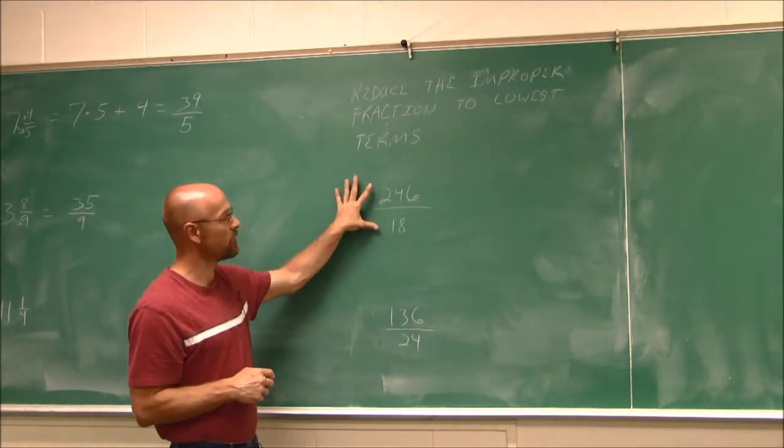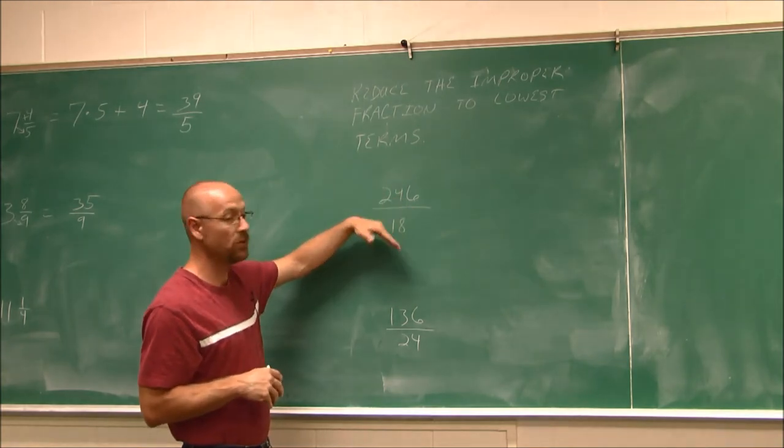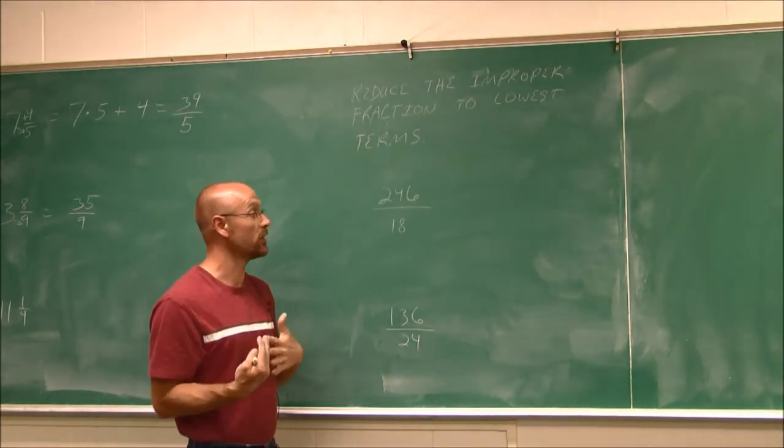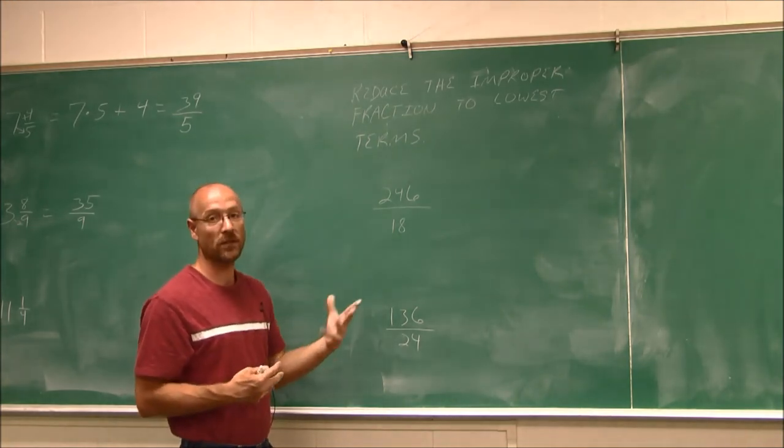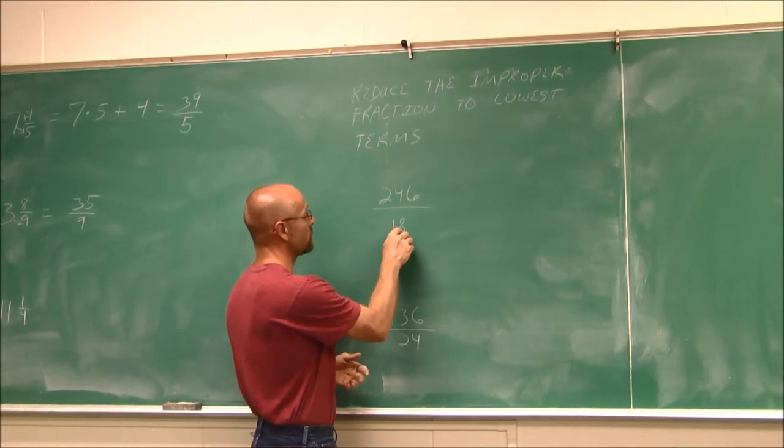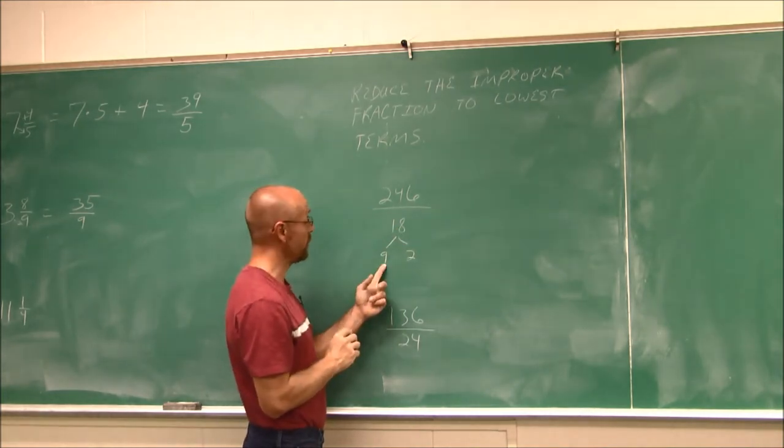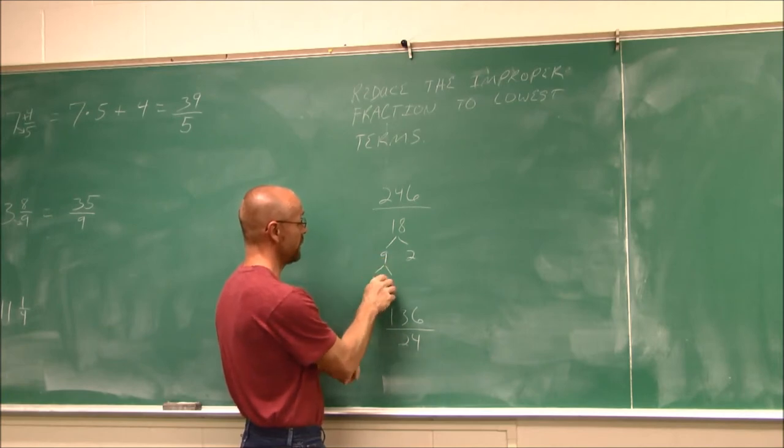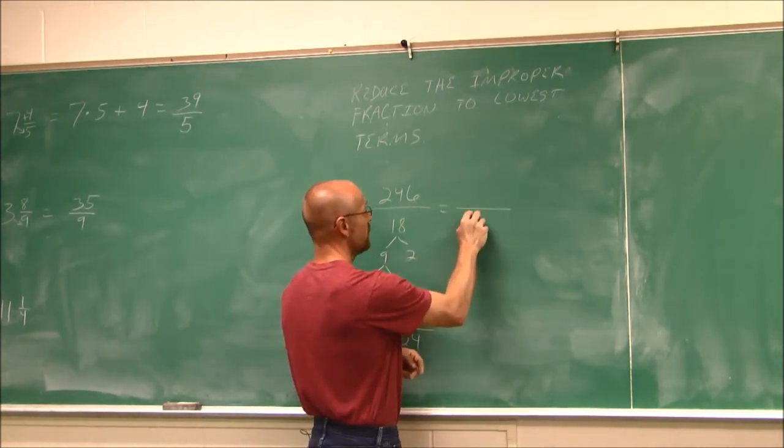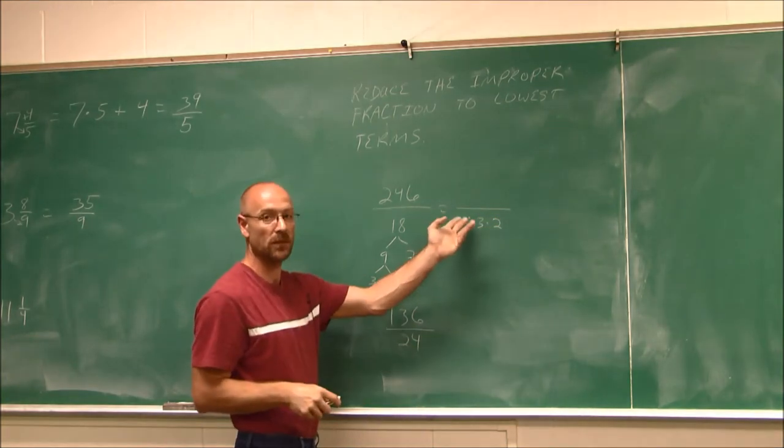So I'm going to leave it as an improper fraction, and I'm going to reduce it. Now these numbers are relatively large compared to the examples we've seen. And I could do the division, but I'm going to use a tool that we learned in a previous section. And I'm going to use prime factorization. 18 I know is 9 times 2. And I know 9 is 3 times 3. So this denominator is 3 times 3 times 2. Or I could write it as 3 squared times 2.